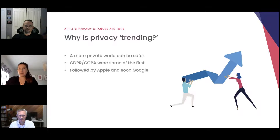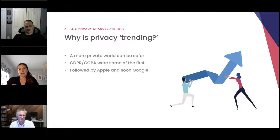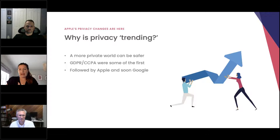Privacy is trending at the moment, as we all know — it seems to be a buzzword we're all hearing about. That's really because data is at the cornerstone of everything we do nowadays, and in a more private world, data is safer. As we scale the usage of data across the globe, these privacy frameworks are in place to protect us as consumers. Back in 2018, GDPR was one of the first things that ricocheted us into this new world, and CCPA then soon followed in the US. We're now seeing Apple really at the forefront of privacy, with changes to their Safari browser and now their mail privacy protection. Google will also soon follow in 2023 with their changes to third-party cookies.